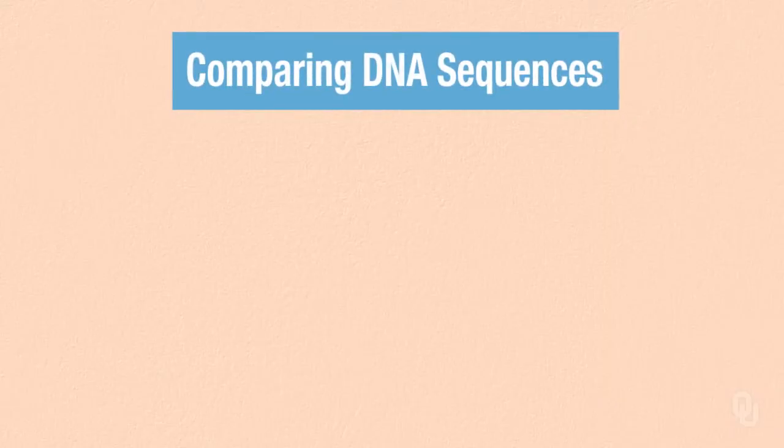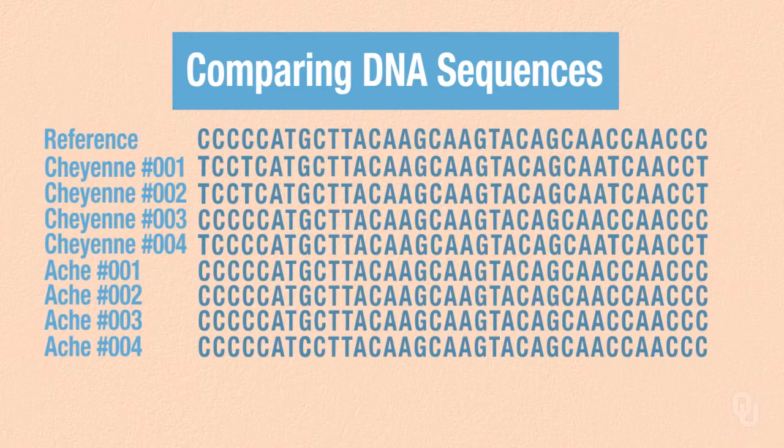To start, imagine we have DNA sequence data for eight individuals — four from the Cheyenne, a Native American ethnic group, and four individuals from the Aceh, a South American hunter-gatherer tribe. We line up the DNA sequence data to a known reference sequence, which is a DNA sequence that earlier scientists provided to help later scientists organize and present their data. In our example, we are looking at a portion of the mitochondrial genome that is known to be highly variable.